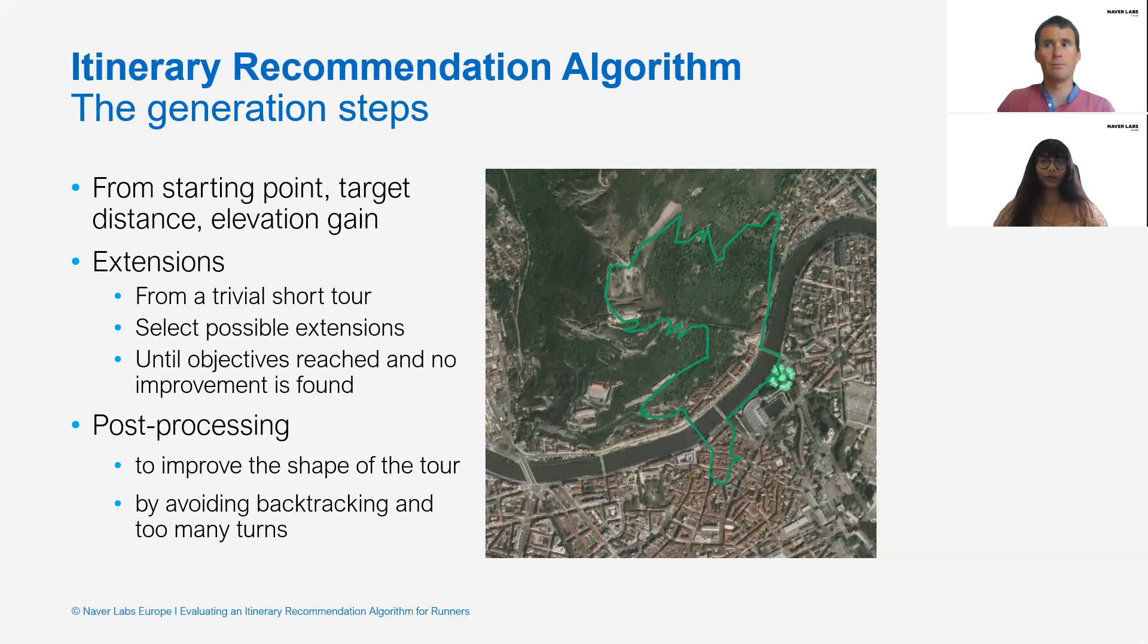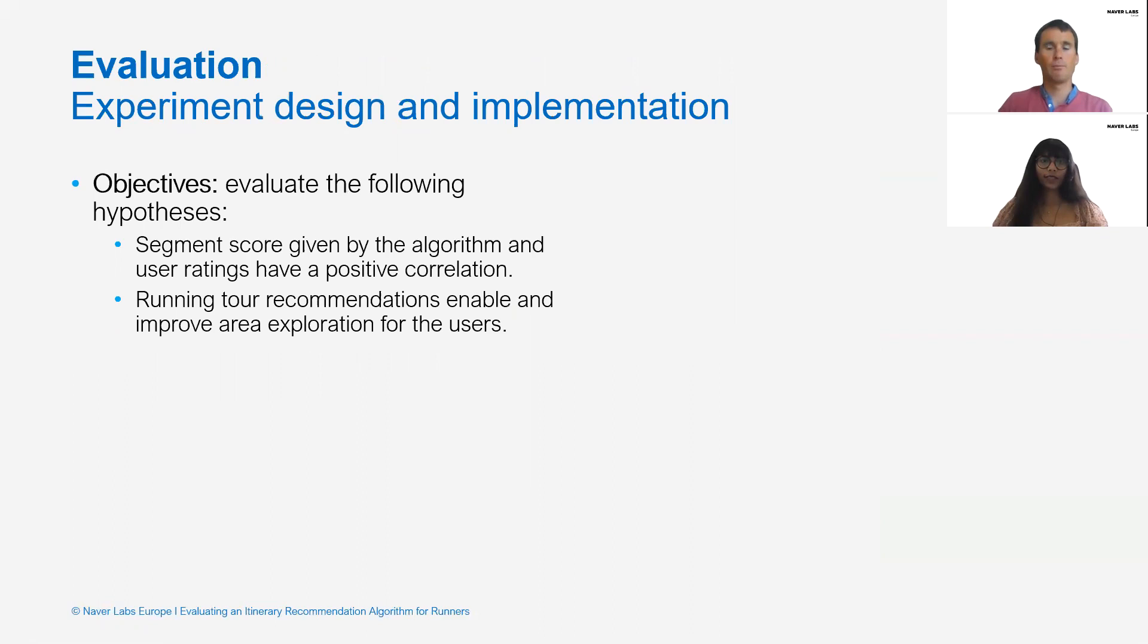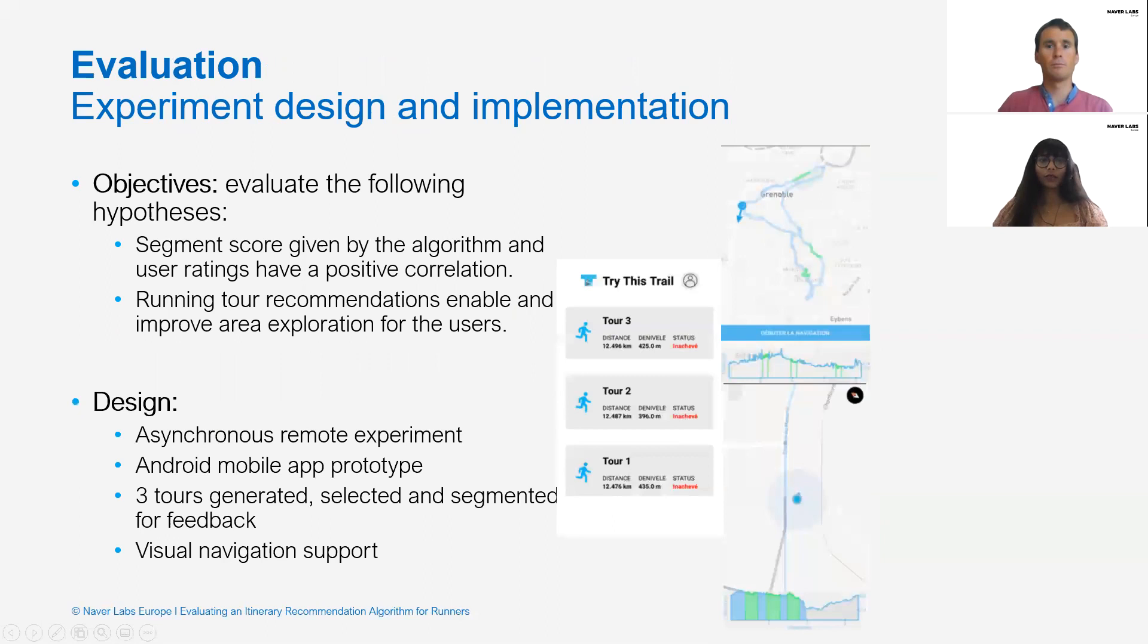In order to evaluate the quality of the proposed score, we designed an experiment with the main objective of assessing the correlation between the score given by the algorithm and the user's rating at a segment level. Additionally, our evaluation should also validate that the tool improves exploration for users. We chose to conduct an asynchronous remote experiment in a real environment as the usability evaluation of a recommender system should consider the context of its use.